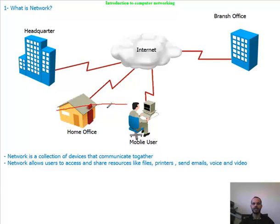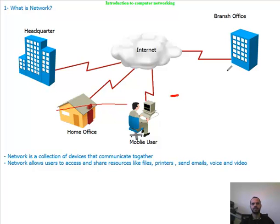The network is the infrastructure that applications use. For example, this user here is connecting remotely to the branch office — let's say an administrator connecting to the branch office to do some configuration, retrieve data, or something like that. That is the network.